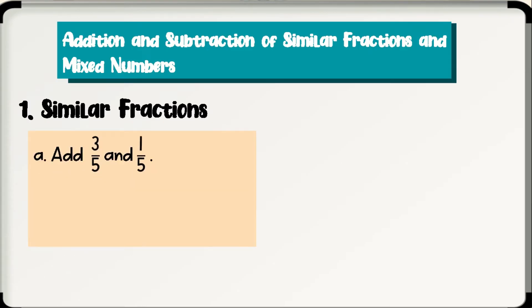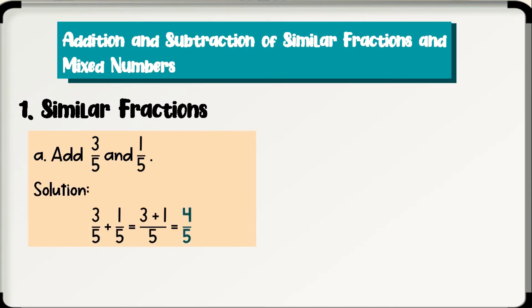Letter A: add 3 fifths and 1 fifth. Solution: 3 fifths plus 1 fifth is equal to 3 plus 1 for the numerator, then copy the common denominator, which is 5. So we have 4 fifths. Therefore, 3 fifths plus 1 fifth is equal to 4 fifths.